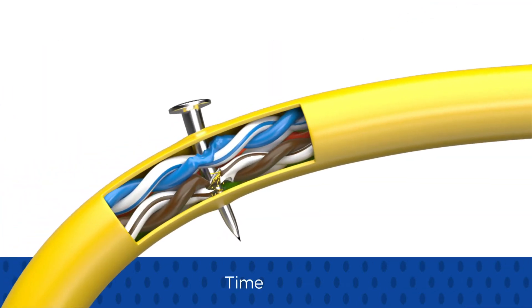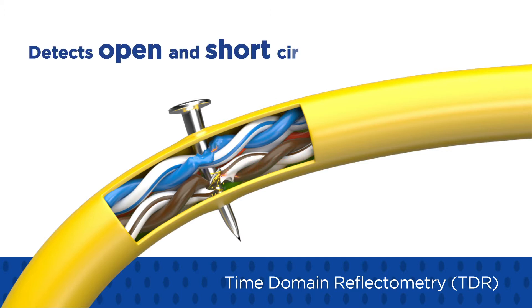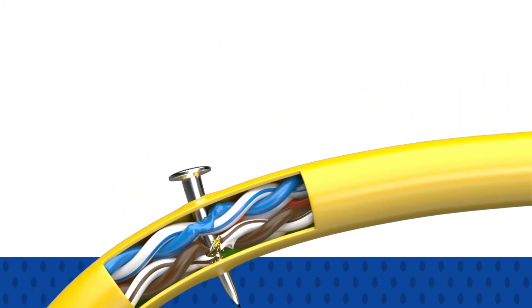SignalTex CT uses time domain reflectometry, or TDR, that helps locate common wiring faults such as open and short circuits, which are a common cause of network downtime and slow transmission speeds.